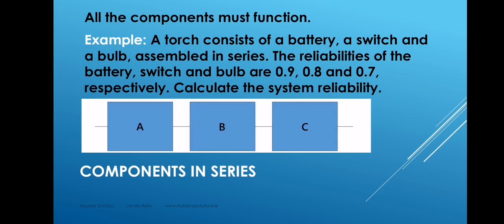Where a product is made from a number of components, we can calculate the reliability of the product if we know the reliabilities of the individual components. The simplest way of arranging components together in a product is what we call components in series. By this we simply mean that all of the components must work in order for the product to work.